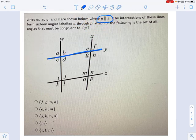This line right here, y, is parallel to line z, and what it's asking me is, we've got a whole bunch of intersections here, which of the following is the set of all angles congruent to p?